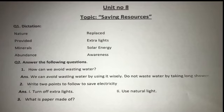Question no. 2 is: write two points to follow to save electricity. Wo koon se do points ho sakte hain jinhe follow karke aap electricity yaani bijli ko bacha sakte hain? Aapne apne answer mein koi se do points mention karne hain. First point: turn off extra lights.